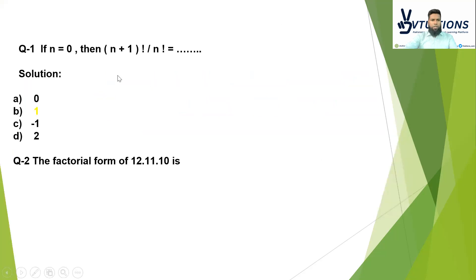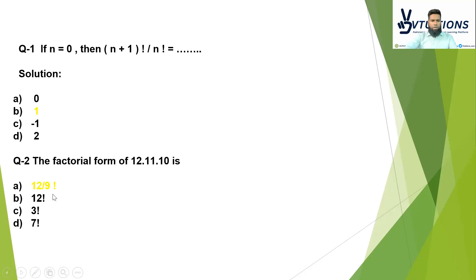Now let's see what MCQs we have. Question number one: if n is equal to zero, then (n+1) factorial divided by n factorial is what? The answer is one. This is a common theoretical MCQ, so remember the answer is one. The factorial form of 12·11·10 — what will it be? It will be 12 factorial divided by 9 factorial. Just like for 10, subtract one to get 9 factorial below and write past value on top.